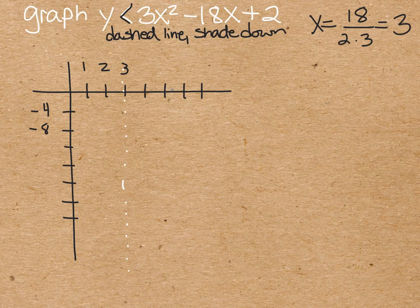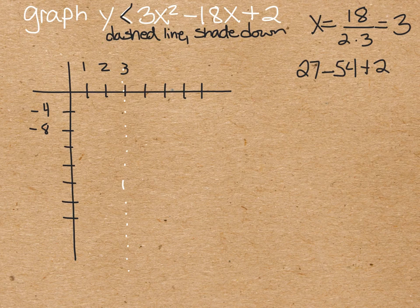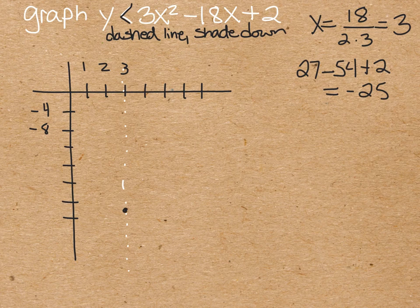And then if we plug in a 3, we get 3 times 3 squared is 27, minus 18 times 3, which is 54, plus 2, which gives us negative 25. So that's why I'm counting these by 4s, 4, 8, 12, 16, 20, 24. So negative 25 is going to be right there.